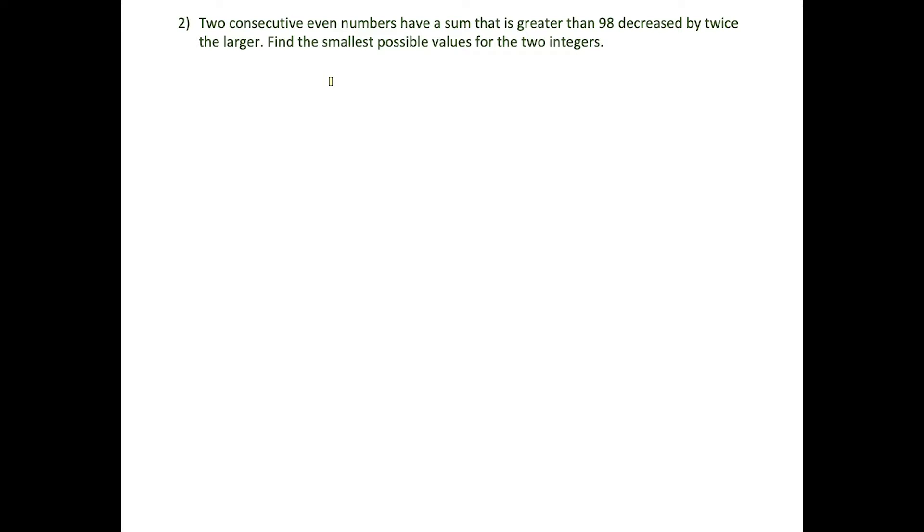Okay, so take a moment to read through the second question. What we're looking for here is we want to find two consecutive even numbers that have a sum that is greater than, and now this part's a little wacky, the sum has to be greater than 98 decreased by twice the larger, and the larger what we're talking about here is the larger even number. The task here is to find the smallest possible values for these two integers.